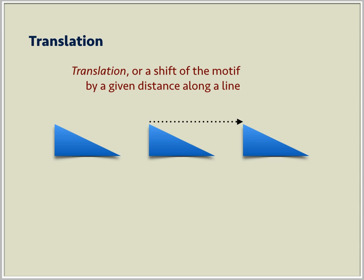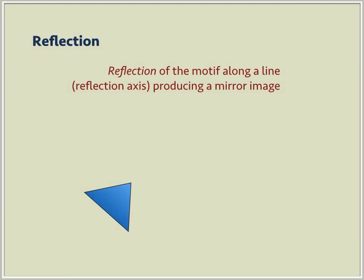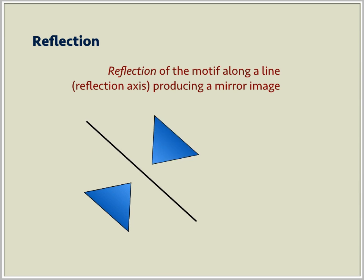A reflection, on the other hand, moves a motif along a line called a reflection axis, producing a mirror image.